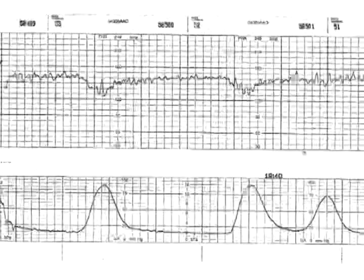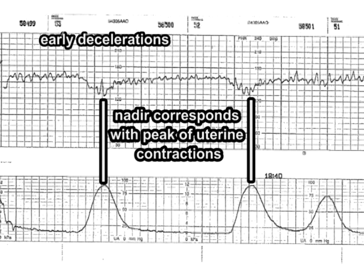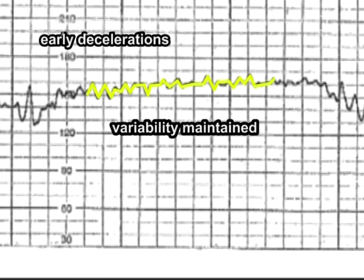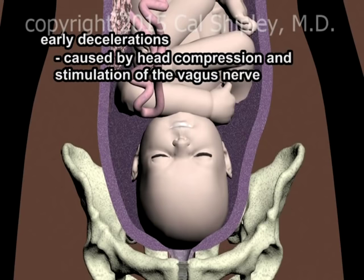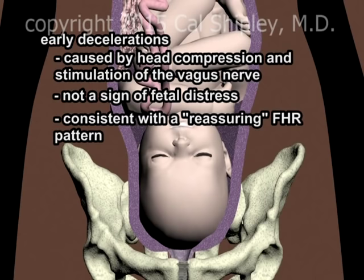Let's start our review of decelerations by looking at early decelerations. Early decelerations have a slow onset and a uniform shape, and their nadir — the point at which the fetal heart rate is at its lowest — corresponds with the peak of uterine contractions. The fetal heart rate returns to baseline with the end of the uterine contraction, and normal beat-to-beat variability is maintained throughout. Early decelerations are caused by compression of the fetal head during uterine contractions, which causes stimulation of the vagus nerve and temporarily reduces fetal heart rate. Early decelerations are not considered to be a sign of fetal distress, and as such are consistent with a reassuring fetal heart rate pattern.